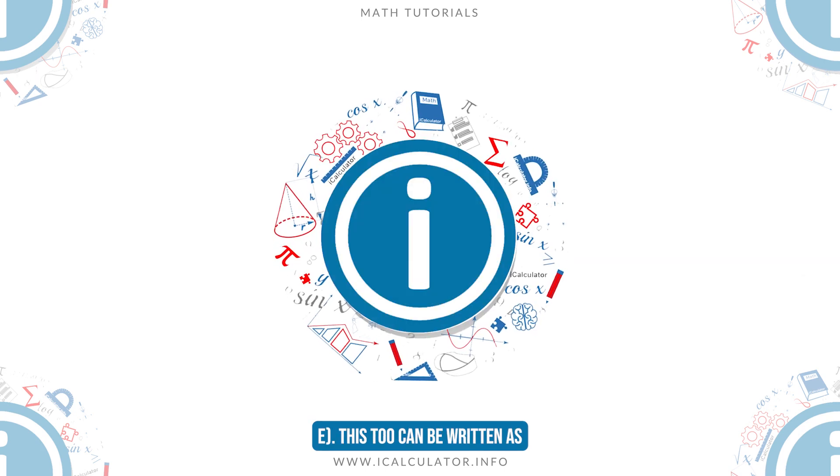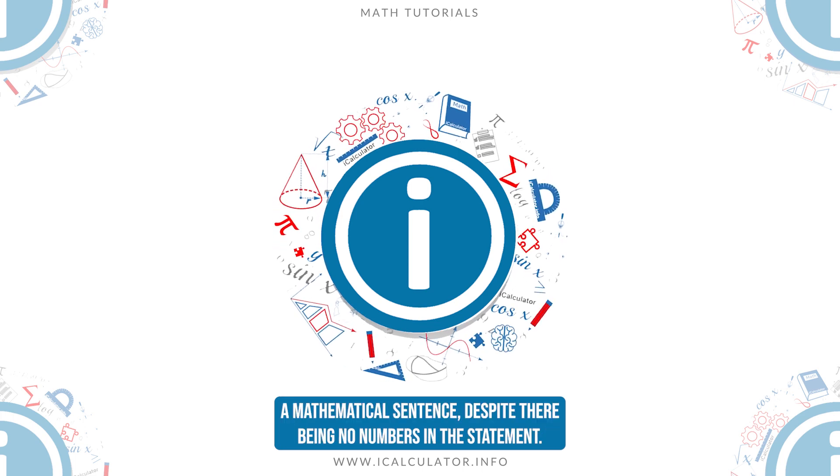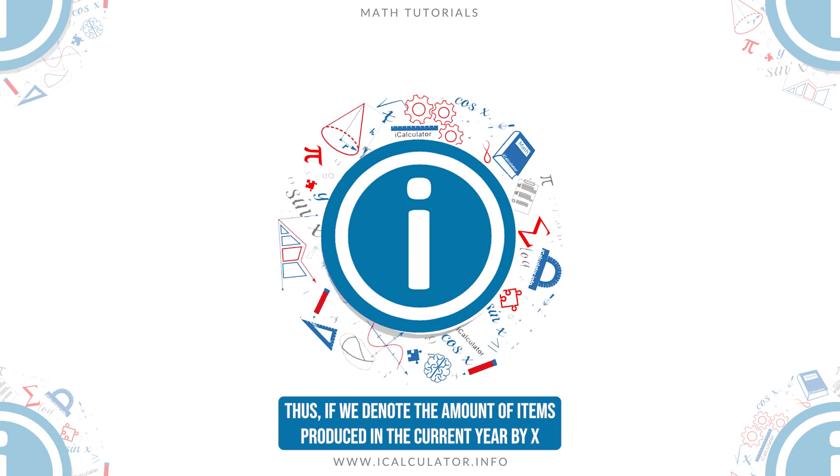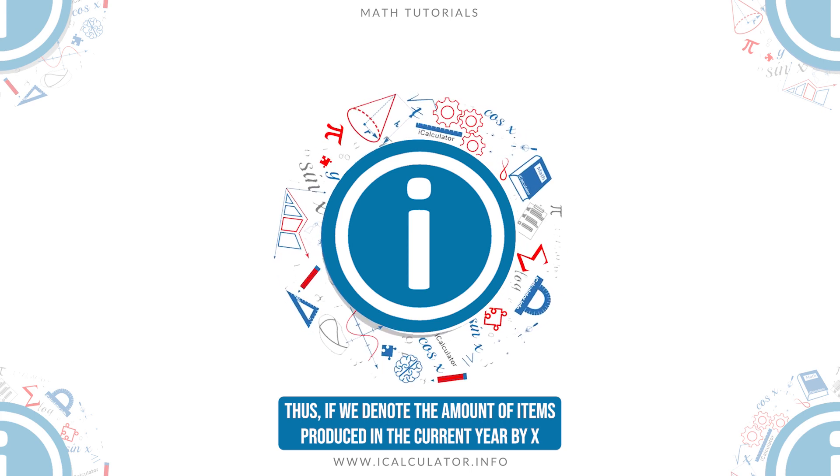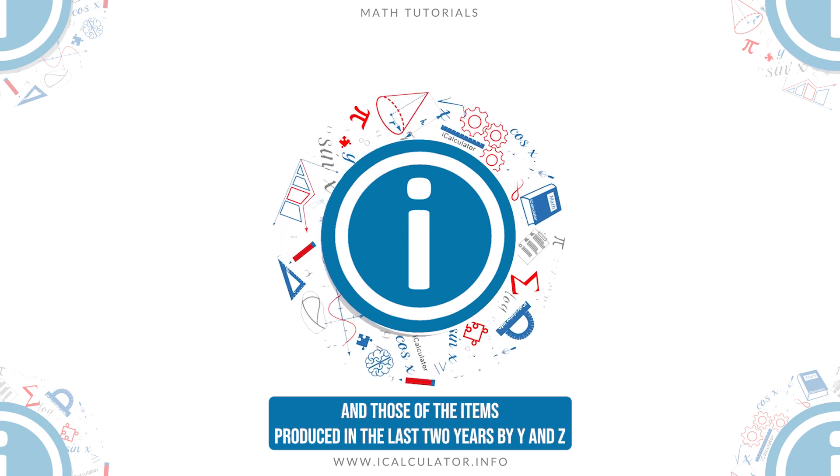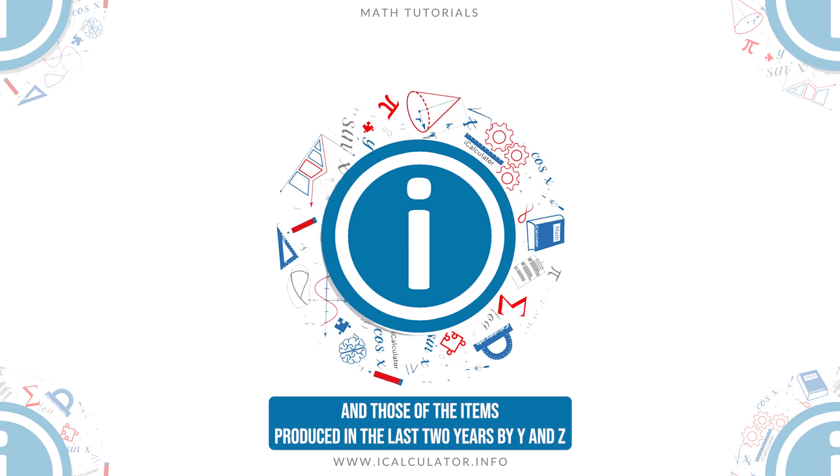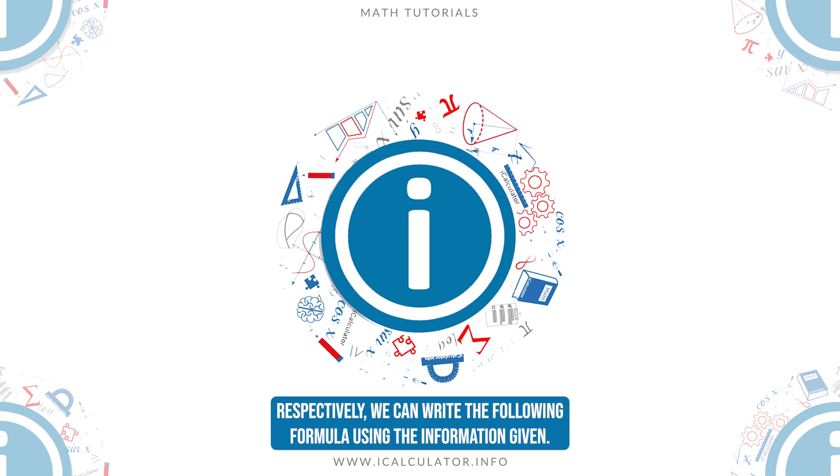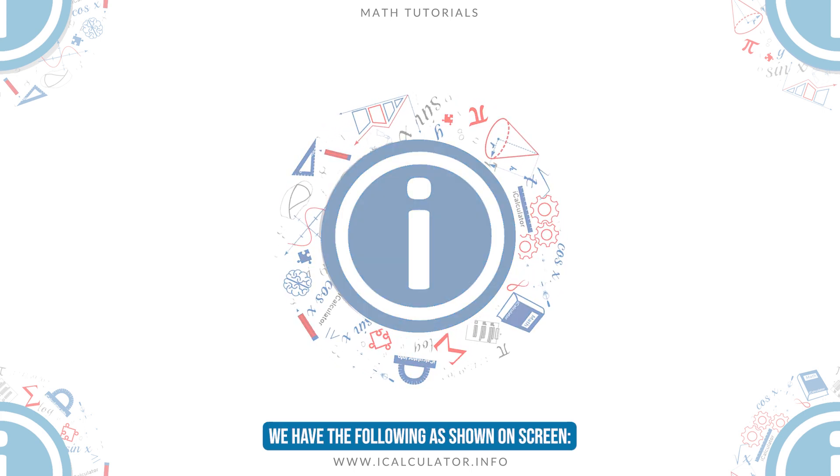E: This too can be written as a mathematical sentence despite there being no numbers in the statement. Thus, if we denote the amount of items produced in the current year by X and those of the items produced in the last two years by Y and Z respectively, we can write the following formula using the information given as shown on screen.